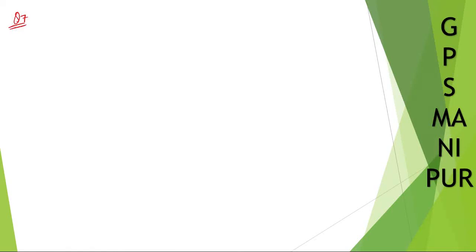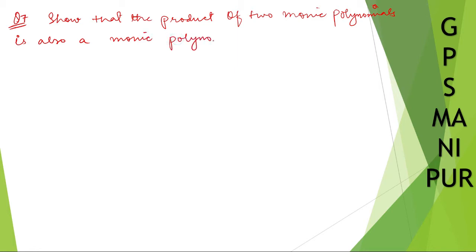Question number seven: Show that the product of two monic polynomials is also a monic polynomial. Okay, so what the question is saying is that the product of two monic polynomials is a monic polynomial. Solution: